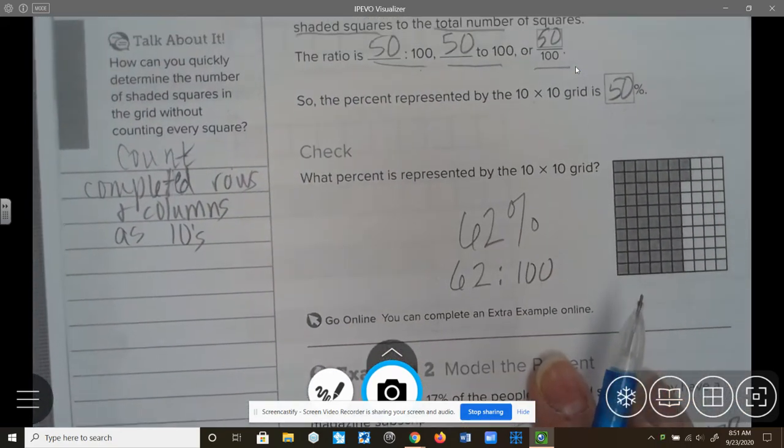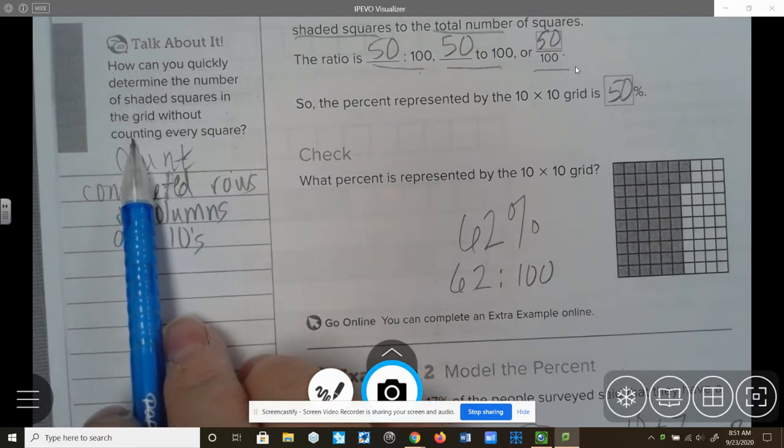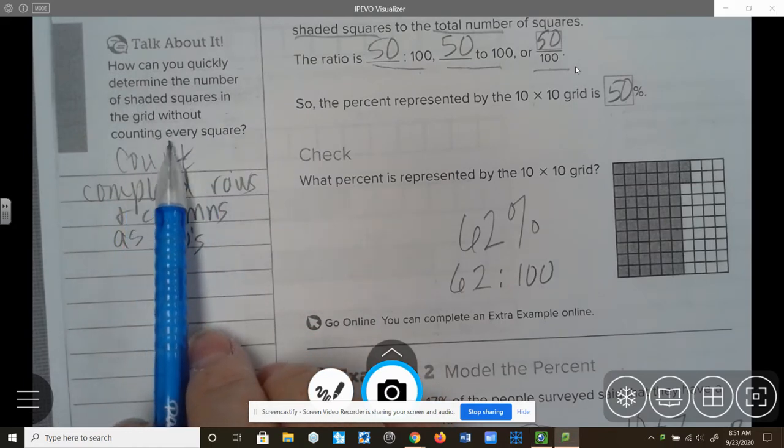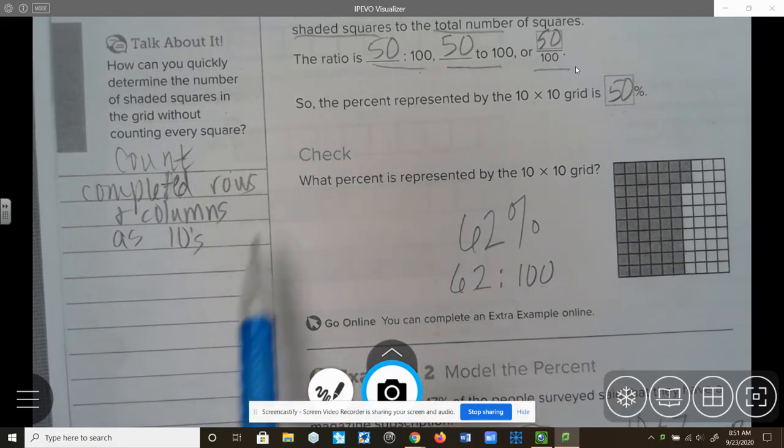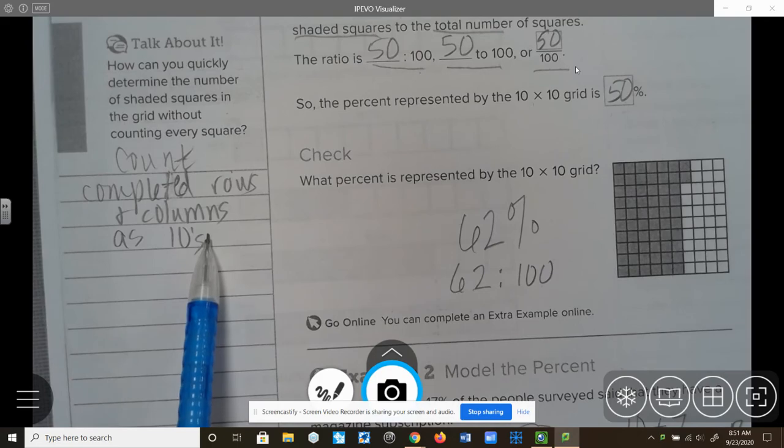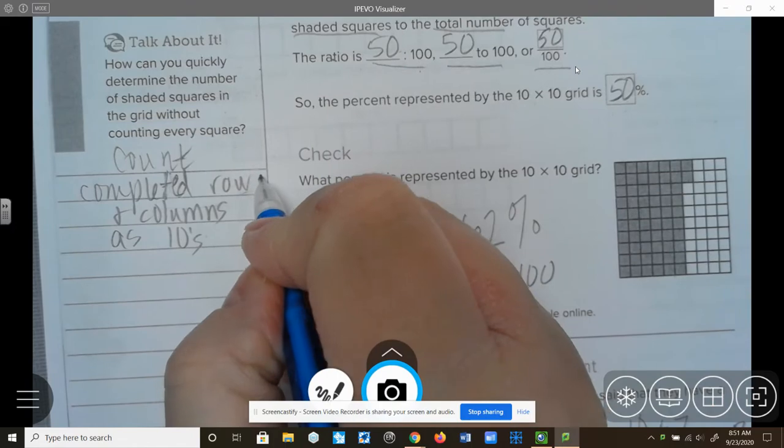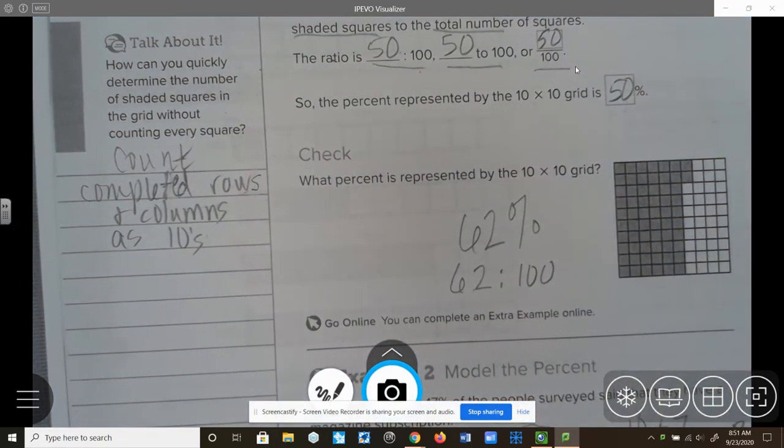On this side, the question, talk about it. How can you quickly determine the number of shaded squares in the grid without counting every single square? And I've been showing you in modeling those so you can count the completed rows and columns as tens. You can go ahead and write that down.